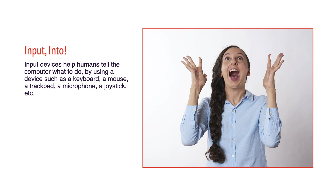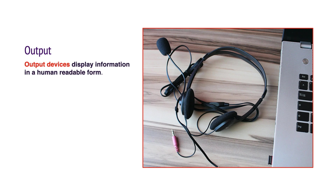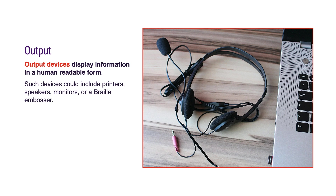Input devices help humans tell the computer what to do by using a device such as a keyboard, a mouse, a trackpad, a microphone, a joystick, etc. Output devices display information in a human readable form. Such devices could include printers, speakers, monitors, or a braille embosser.